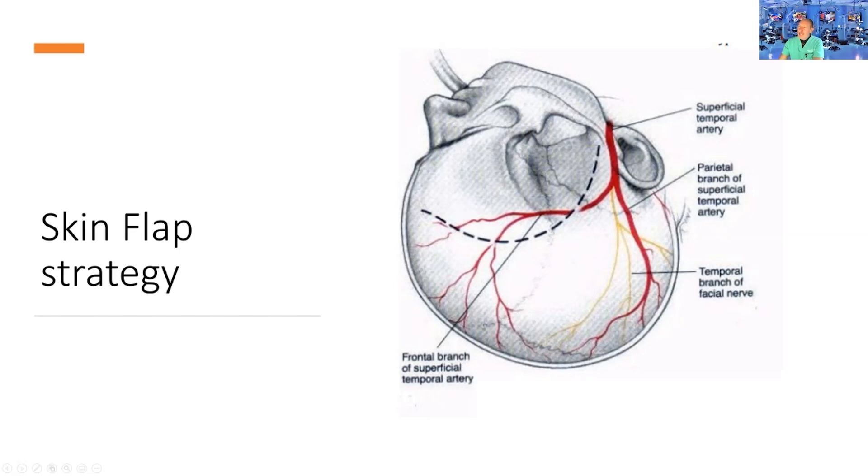There are many different variations now, including a mini-pterional. The classic approach goes one centimeter anterior to the tragus, superiorly across the superior temporal line, and behind the hairline for cosmetic purposes.